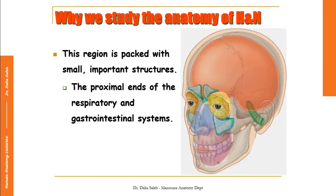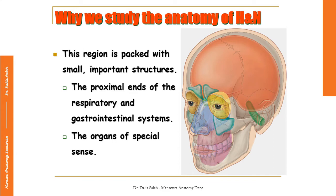The head and neck also contains the organs of special senses. We have the two orbits, which contain the eyes or eye globes concerned with vision. Of course we have the nose — at its roof there are the olfactory receptors responsible for olfaction or smell sensation. We also have the two ears, and the inner ears contain the organ of Corti, which is responsible for hearing. And we have the oral cavity, which contains the tongue, which carries the taste receptors.